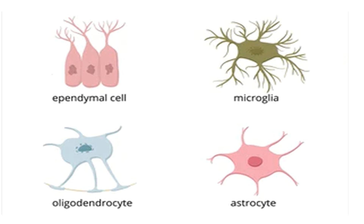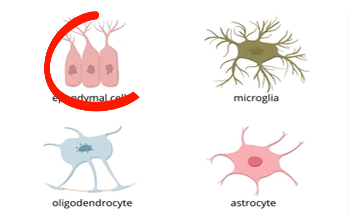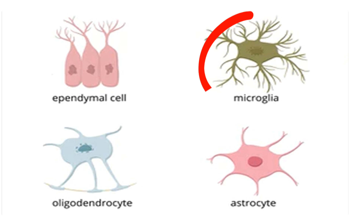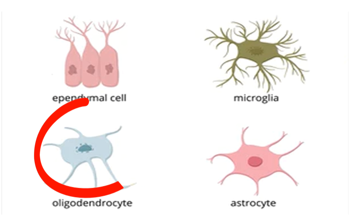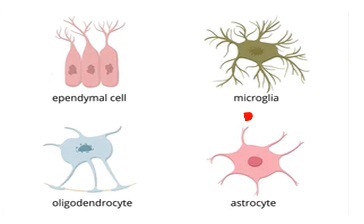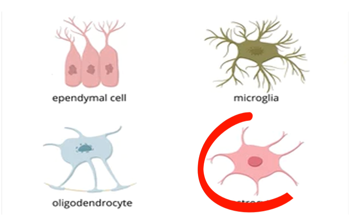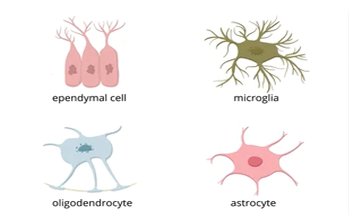Neuroglia make up to 50% of the mass of the brain and spinal cord. There are four types of neuroglia in the CNS: ependymal cells, microglia, oligodendrocytes, and astrocytes. We will learn about all of them one by one.